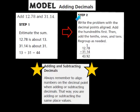Step two says to write the problem with the decimal points aligned. When I look at how my problem is written, I notice that my decimal points are lined up. Your decimal points have to be aligned so you know you're adding the right place values together. We're going to add the hundredths first, then the tenths, the ones, and the tens, regrouping as needed.